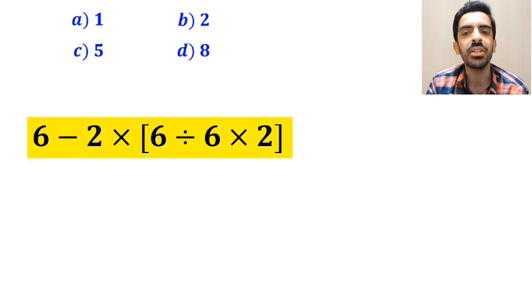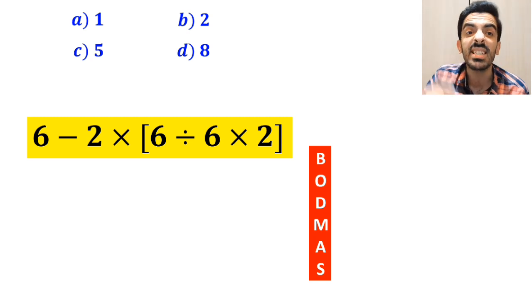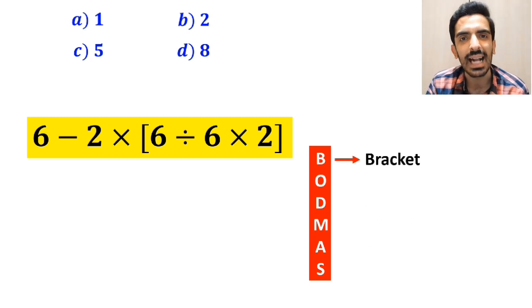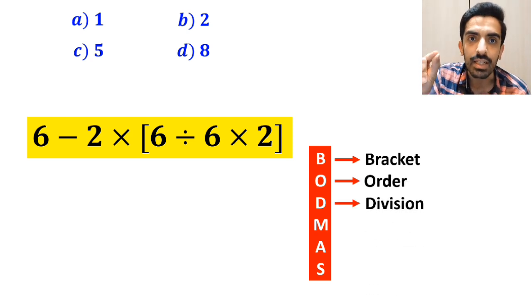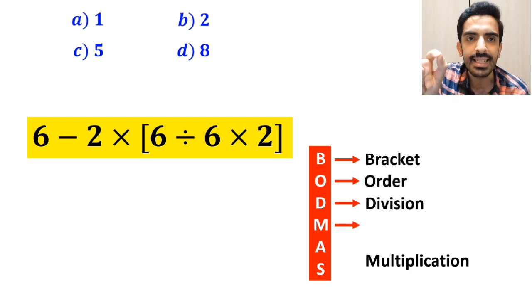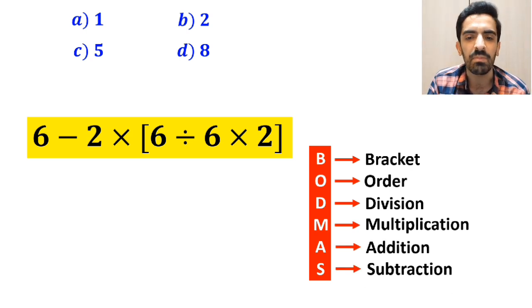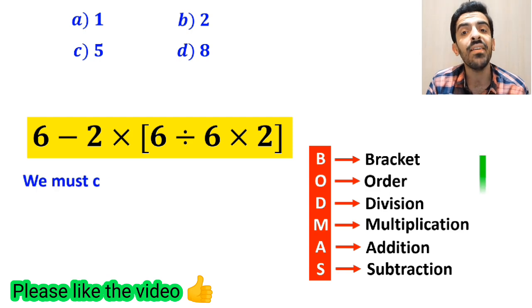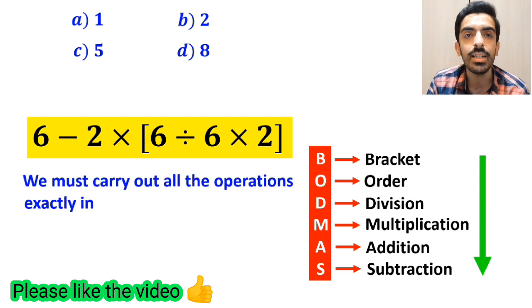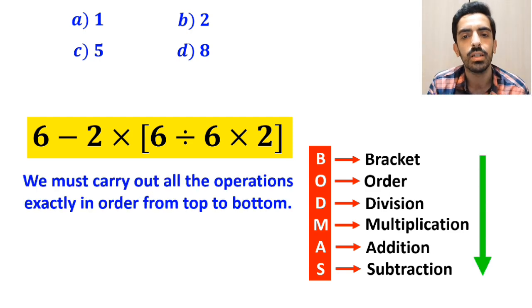To solve this question, we need to strictly follow the BODMAS rule step by step. And this rule: B stands for bracket, O stands for order, D stands for division, M stands for multiplication, A stands for addition, and S stands for subtraction. We must carry out all the operations exactly in order from top to bottom.